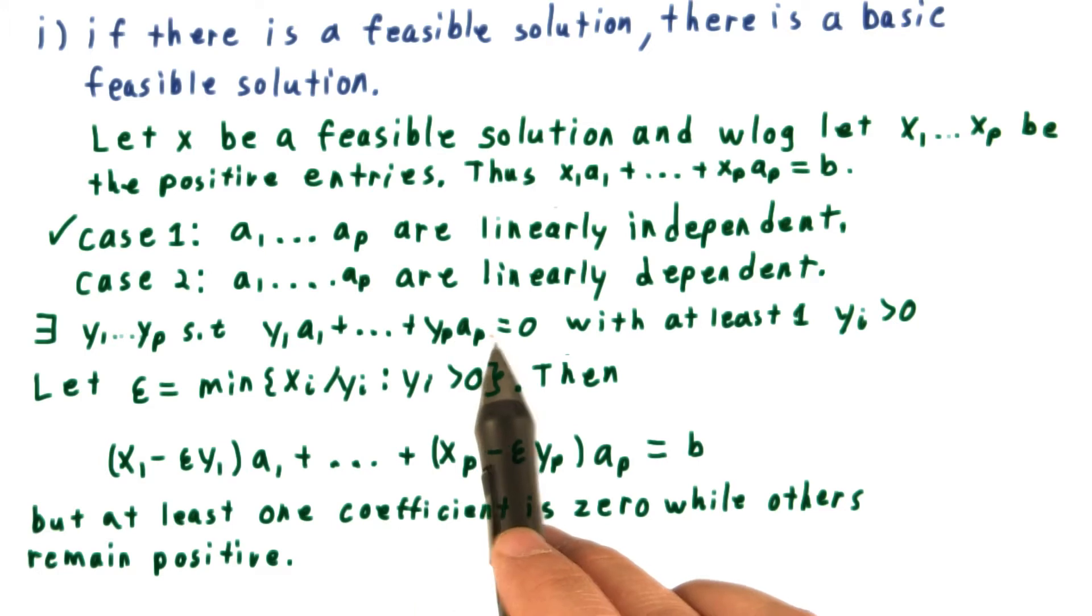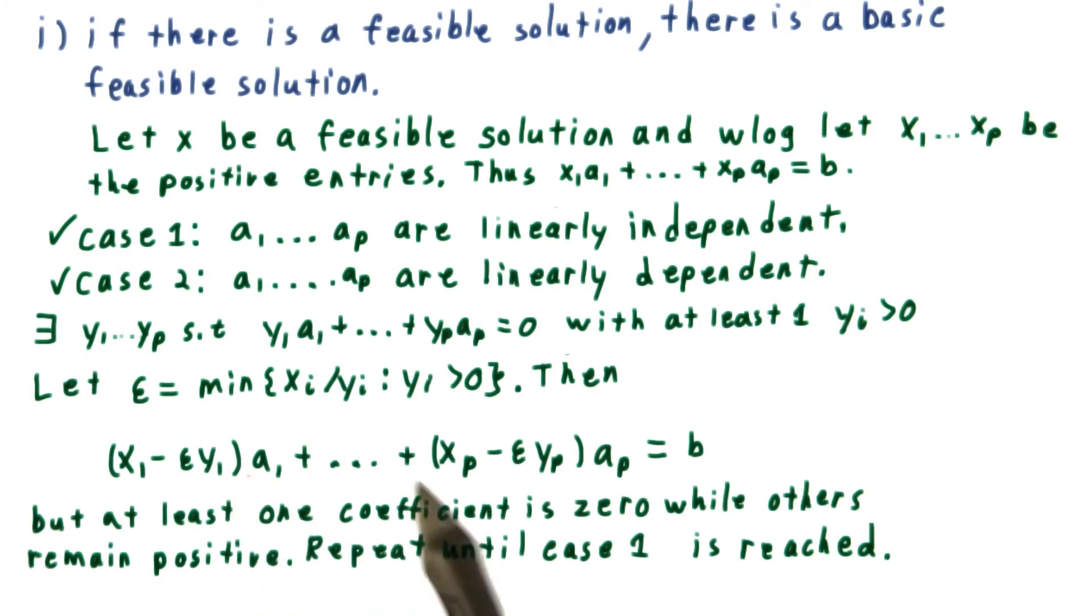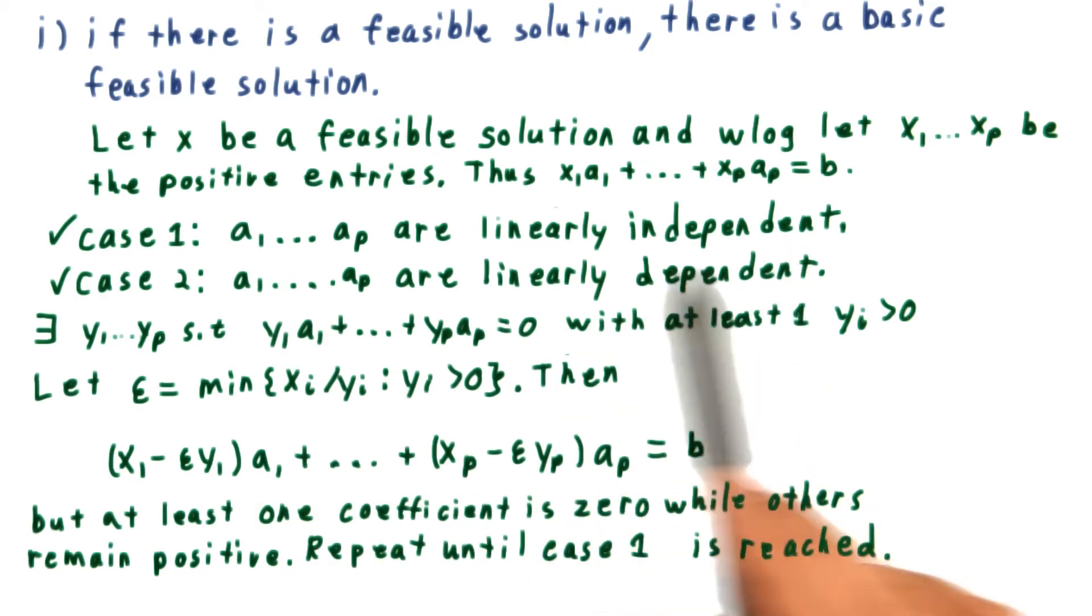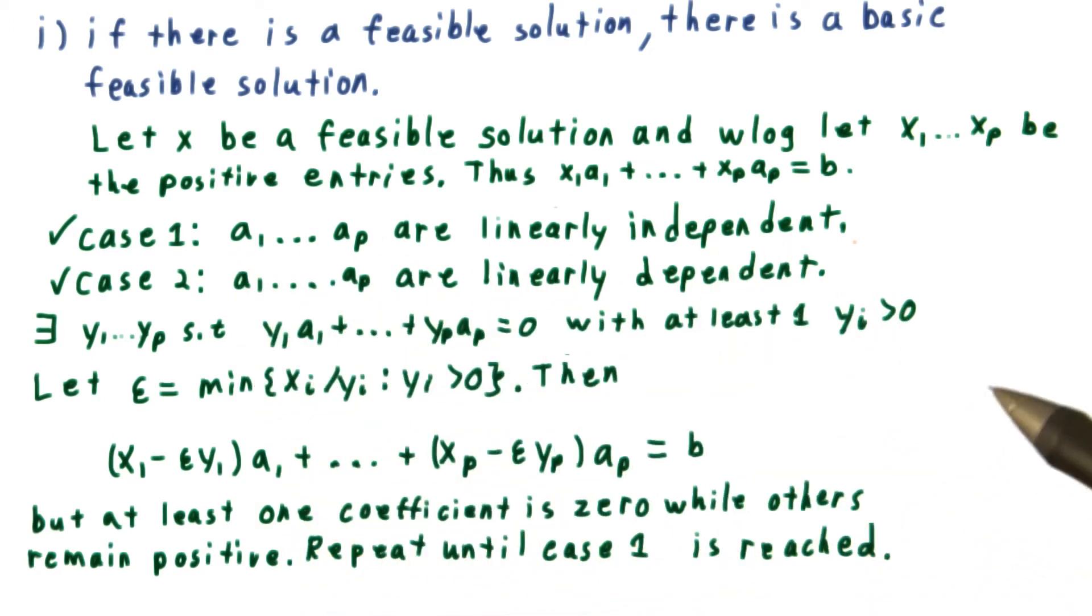Then multiplying this equation by this epsilon, and subtracting it from this one, we end up with this equation here. These coefficients must represent another feasible solution, but by our choice of epsilon, we've set at least one of these coefficients to 0, while the others have remained positive. So we've reduced the number of positive entries in x, and we can repeat this over and over until case 1 is reached, where a1 through ap are linearly independent.